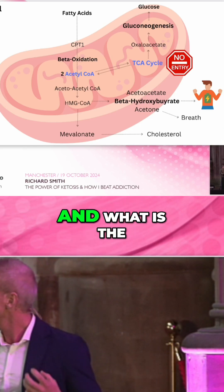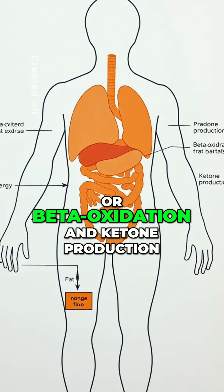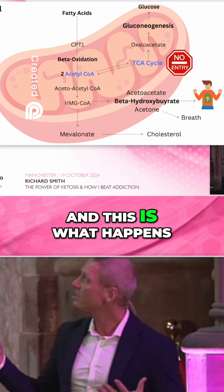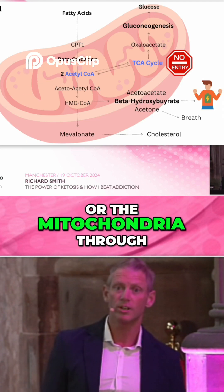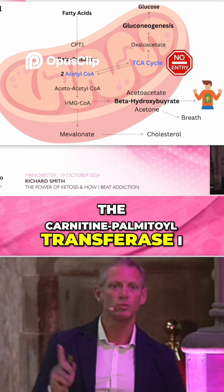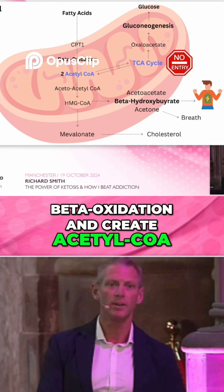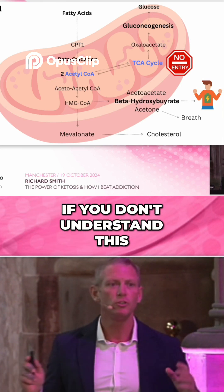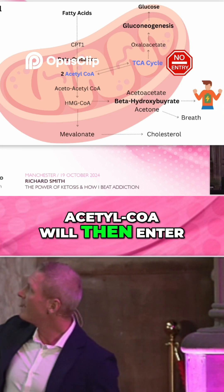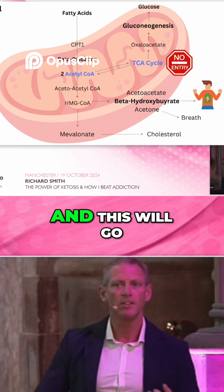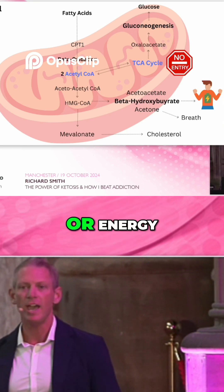Why do we need to produce ketones, and what is the difference between burning fat or beta oxidation and ketone production? Fatty acids typically enter the mitochondria through carnitine palmitoyltransferase 1 and 2, entering beta oxidation to create acetyl-CoA. Acetyl-CoA then enters the citric acid cycle, which goes on to the electron transport chain where we create ATP, or energy.